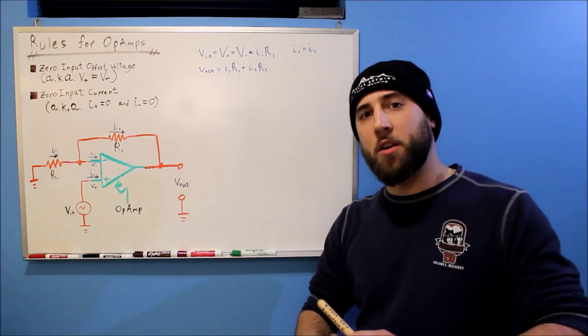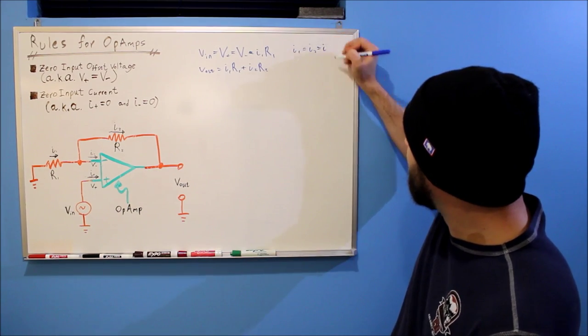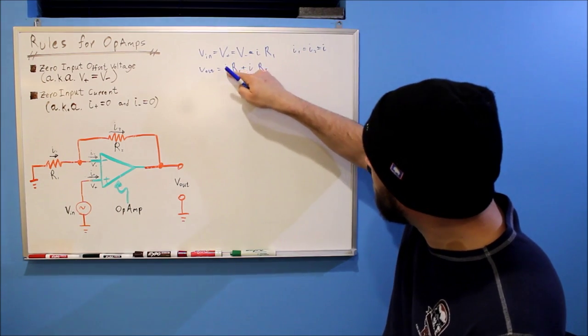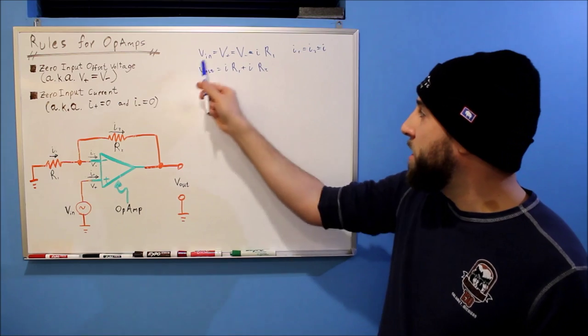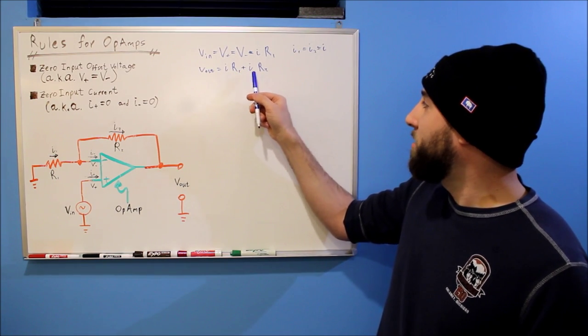And we could just make all the currents the same then. So we could just call them all I. So we can get rid of these little subscripts here. And we're left with V in equals IR1 and V out equals IR1 plus IR2.